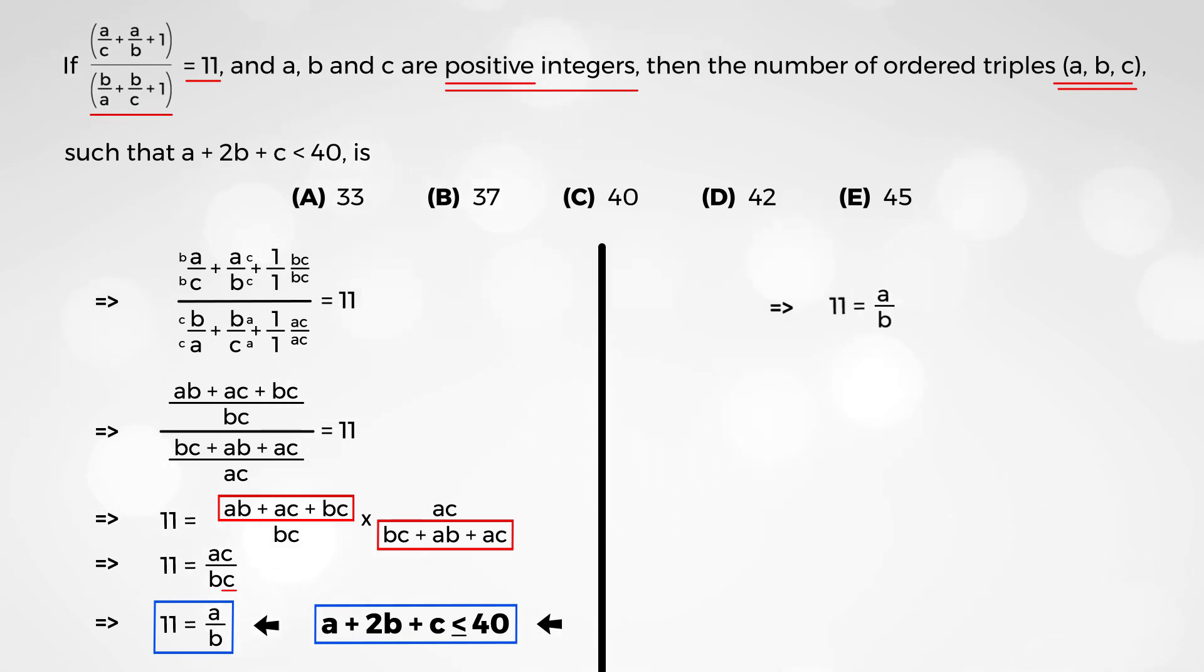So, let's start with the most basic possibility, which is a equals 11, and b is equal to 1. If we do that, then what does this part become? It becomes a plus 2b plus c is less than 40. Plug in these numbers. And we've got 11 plus 2 plus c is less than 40. And c looks like 40 minus 13, which is less than 27.